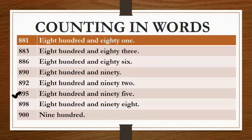895: E-I-G-H-T, eight, H-U-N-D-R-E-D, hundred, and 95, N-I-N-E-T-Y, ninety, F-I-V-E, five.